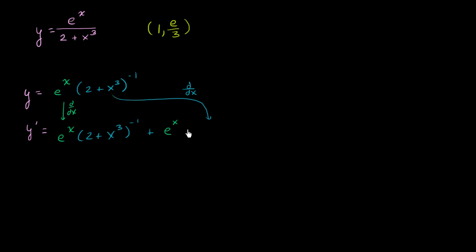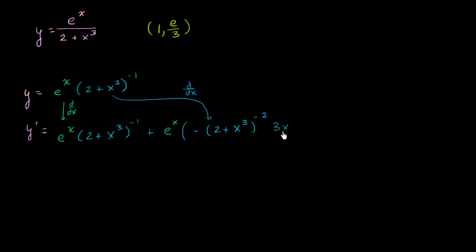This is going to be negative 2 plus x to the third to the negative 2 power, multiplied by the derivative of 2 plus x to the third with respect to x. The derivative of 2 plus x to the third with respect to x is just 3x squared. And of course we could simplify this a little bit if we like.